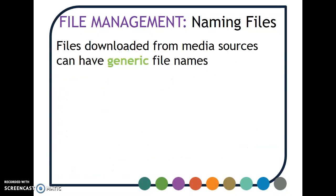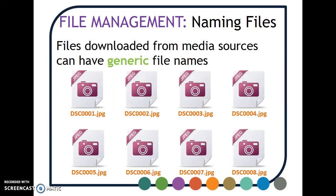One of the things we can look at are files that are downloaded from media sources — things like digital cameras, video cameras, microphones, those kinds of things. They have what we call generic file names, where the device itself organizes it. You can see here an example of that — these are image files stored on a memory card and then transferred to the computer. It also applies to when you download something off the internet, where you quite often have ridiculous file names with lots of letters, numbers, or symbols that mean nothing to you or to anybody else.